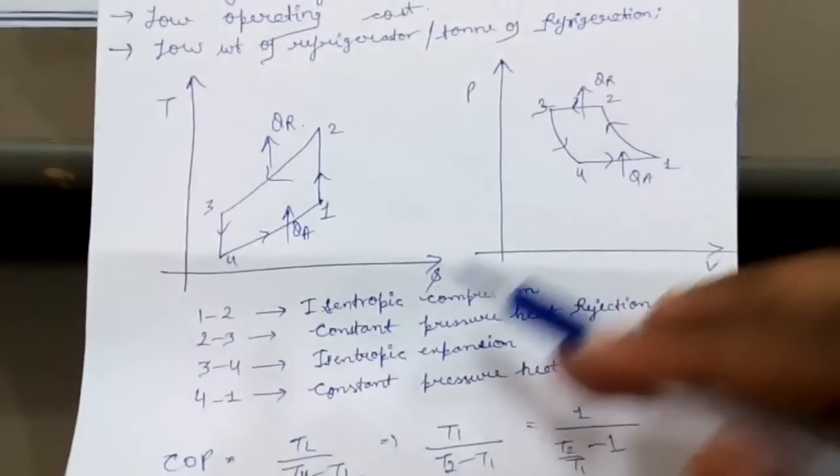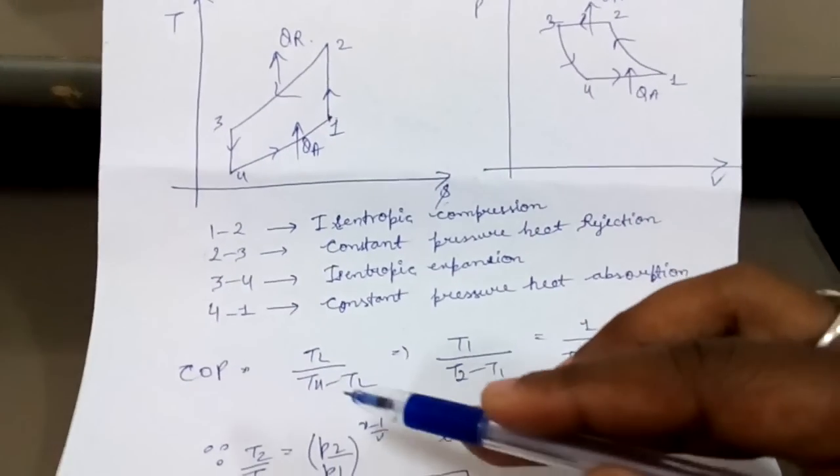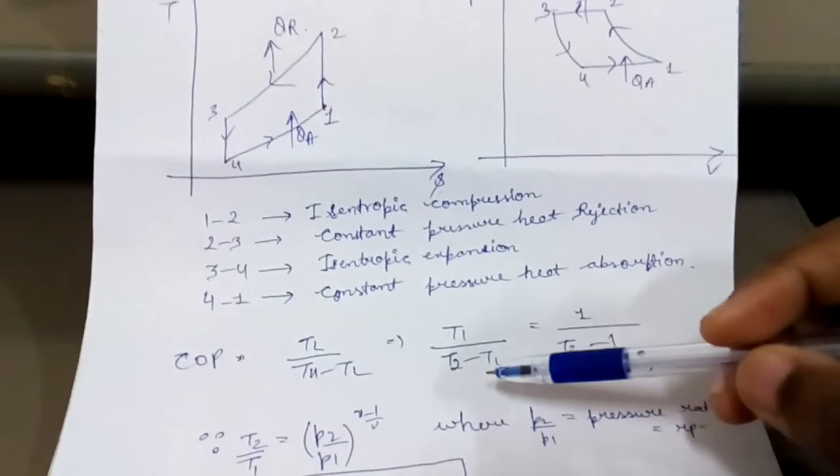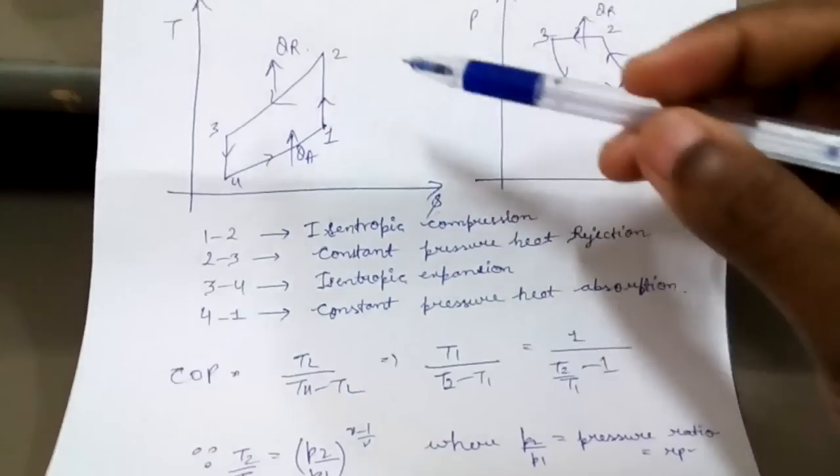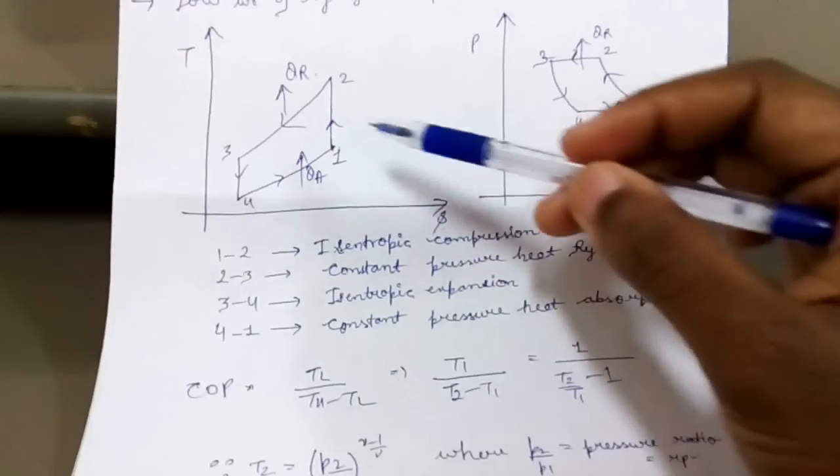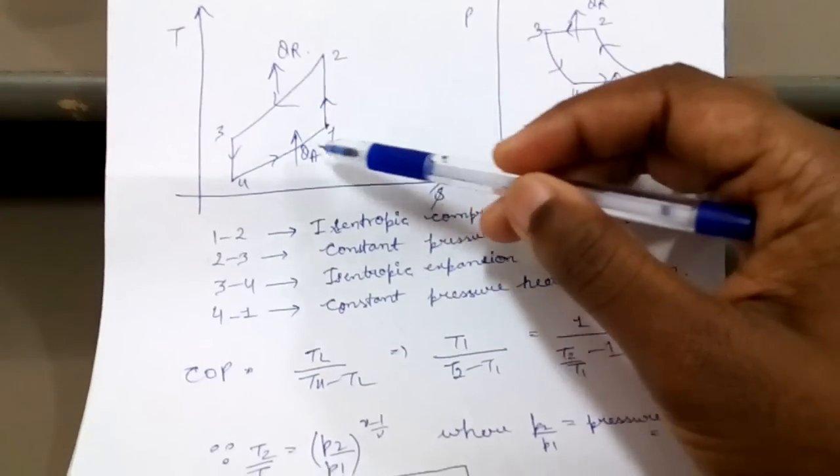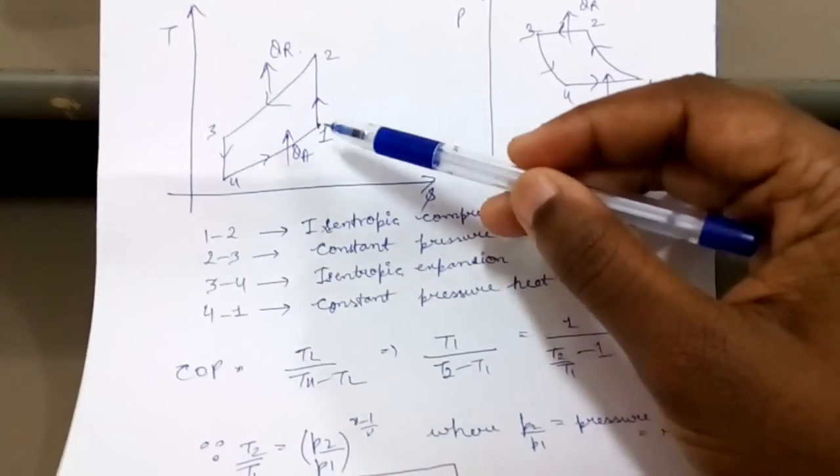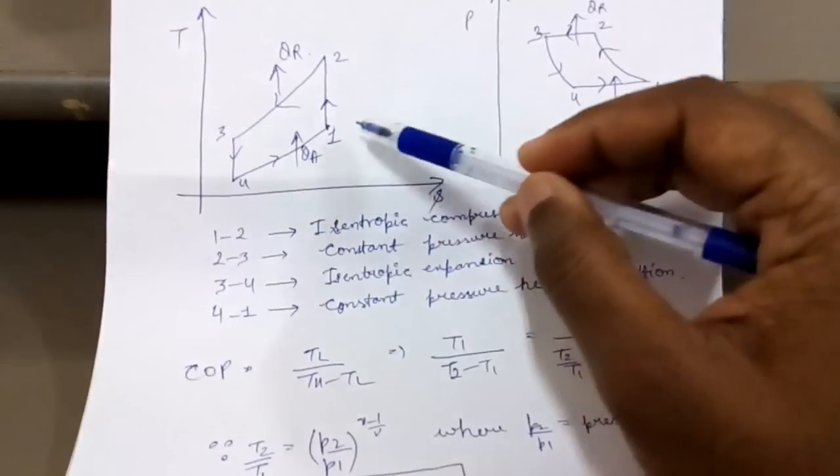Now we know that COP is T lower upon T higher minus T lower, that is T1 upon T2 minus T1. Since T2 is the highest temperature and T1 we have taken lower here because the inlet to the system is at T1 temperature not T4.